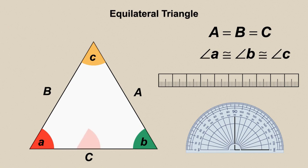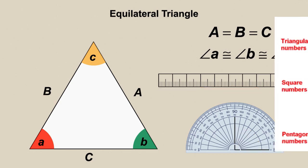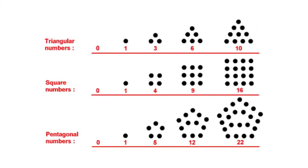Triangular numbers are a sequence of numbers that can form equilateral triangles. The first few triangular numbers are 1, 3, 6, 10, and so on. Each of these numbers represents a count of objects that can be arranged in the shape of an equilateral triangle.